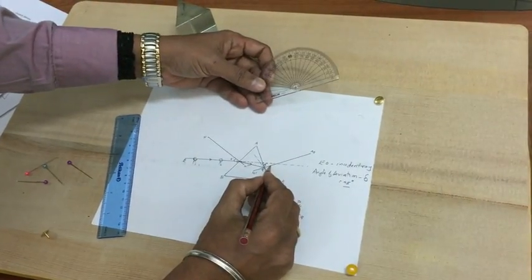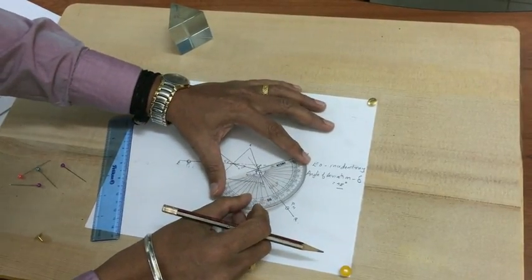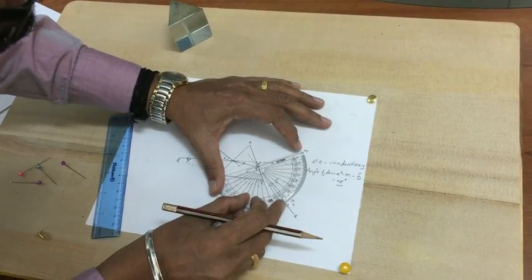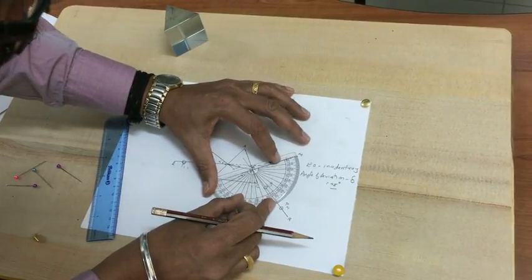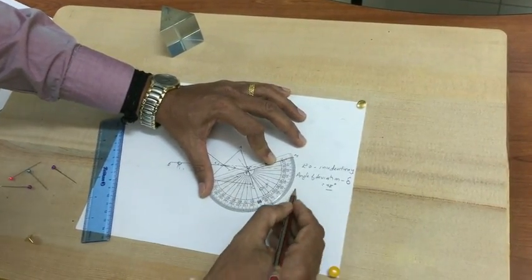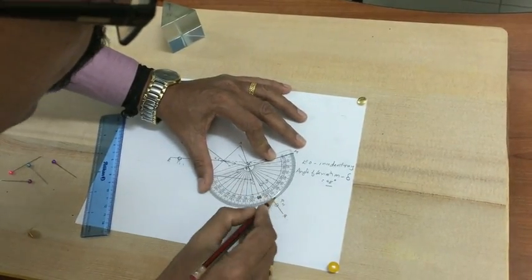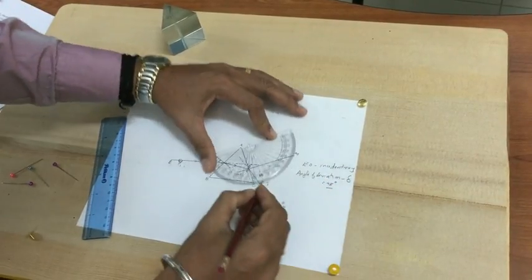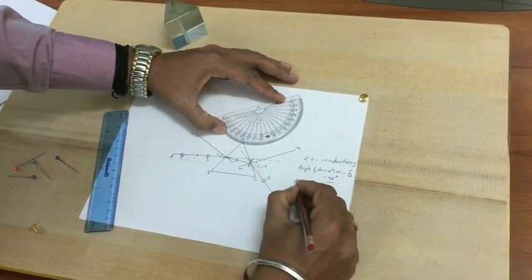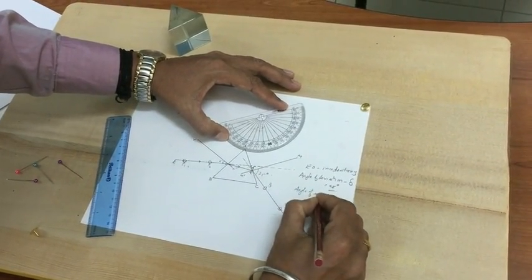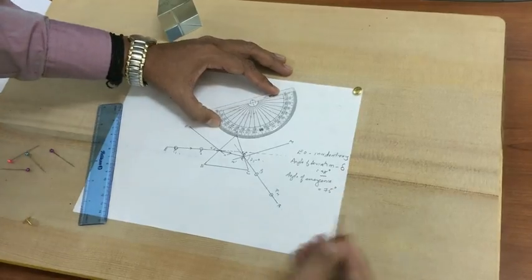Now we have to measure the angle of emergence. With the help of a protractor, keep the protractor at point Q and measure the angle of emergence. In this particular case, you can see that the angle of emergence is close to 75 degrees. So angle of emergence is equal to 75 degrees.